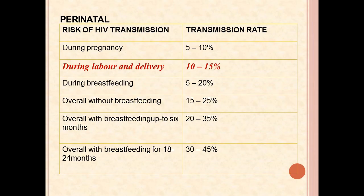Perinatal transmission rates: During pregnancy, transmission is 5–10%; breastfeeding is 5–20%. Most studies show that transmission is highest during labor and delivery at 10–15%. Overall without breastfeeding is 15–25%; overall with breastfeeding up to 6 months is 20–35%; and overall with breastfeeding up to 18–24 months is 30–45%.